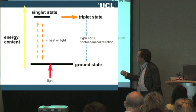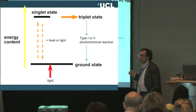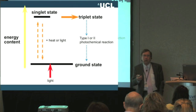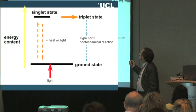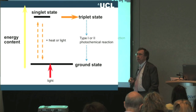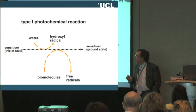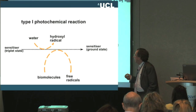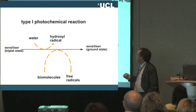Photosensitizers are molecules that, instead of falling back to the ground state, undergo electronic transfer to an excited triplet state. This is an electronically excited state, and it will then fall back to the ground state via a type 1 or a type 2 photochemical reaction. These photochemical reactions are characterized in the next two slides.